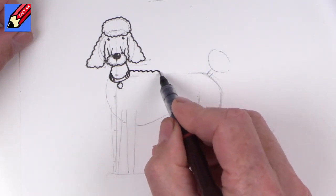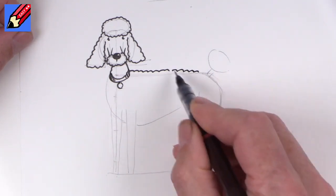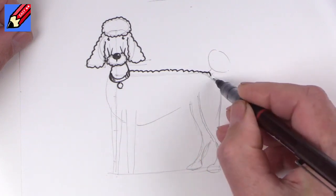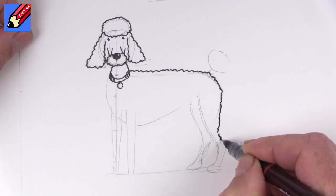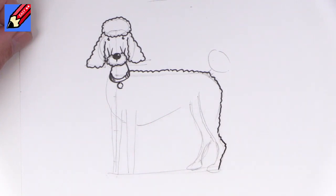And then we can bring the back, very straight back, coming into the curve on the rump like that. And then coming down to the paw.